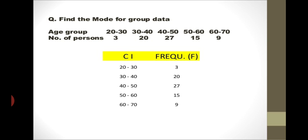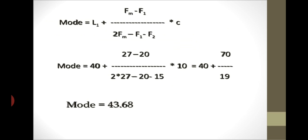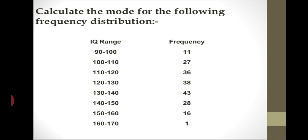Let's calculate a problem with open-end classes. First we identify the modal value, which is 27. The upper frequency f1 is 20, f2 is 15, and L1 is 40. Putting values into the formula: 40 + [(27 − 20) / (2×27 − 20 − 15)] × 10. The final mode is 43.68. Similarly, another problem is solved the same way.